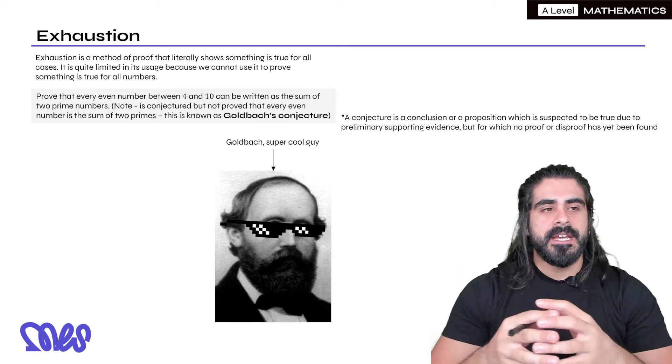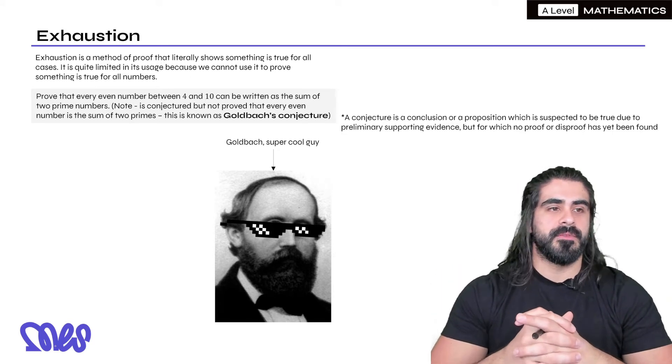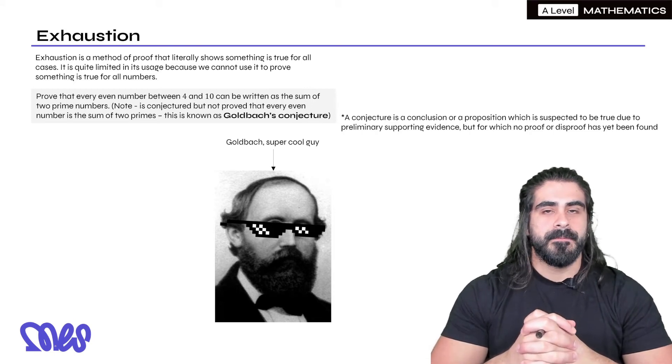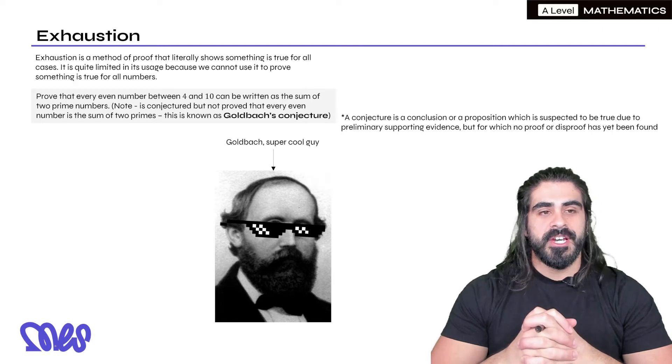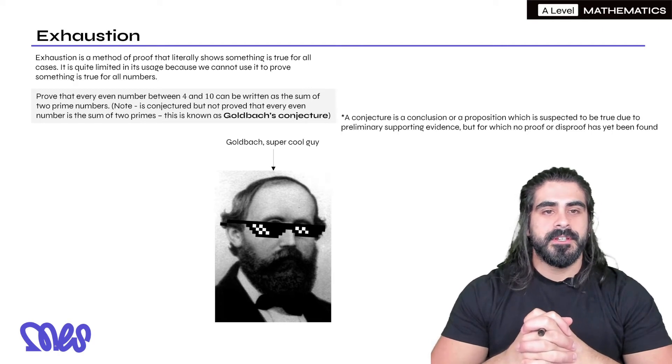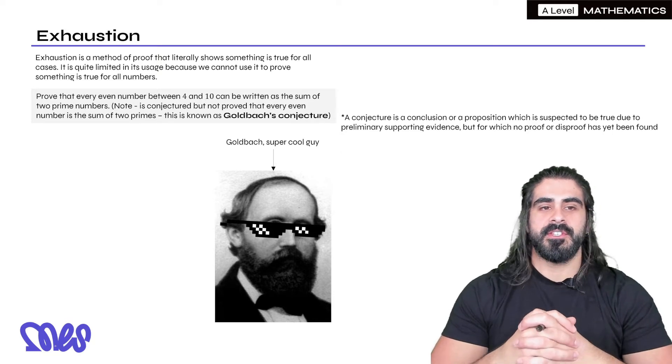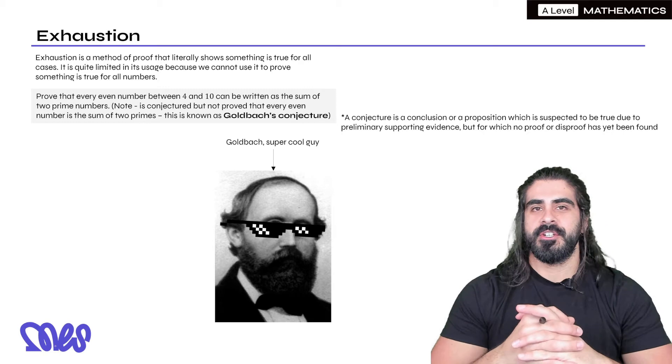So just here's an example of what you could use it for. Prove that every even number between 4 and 10 can be written as the sum of two prime numbers. Now a quick note, it is conjectured but not proved that every even number can be written as the sum of two primes.